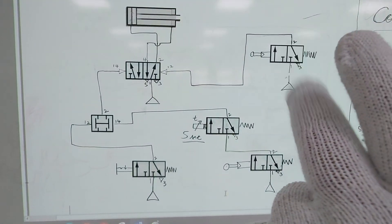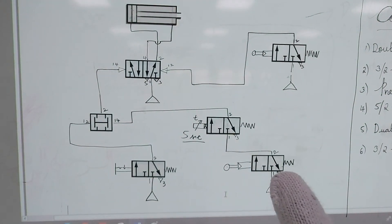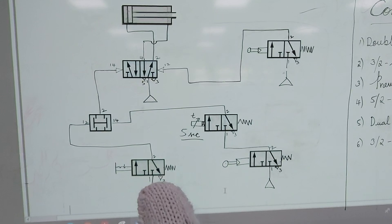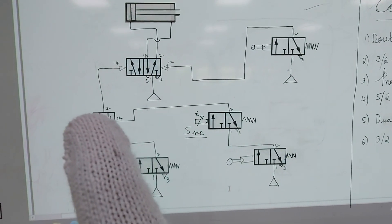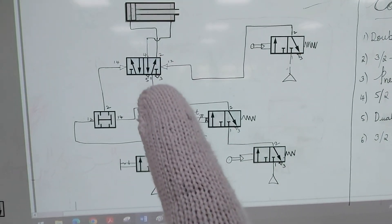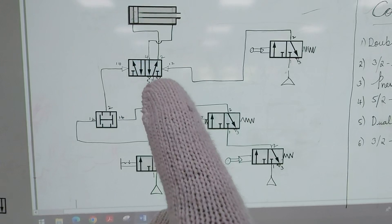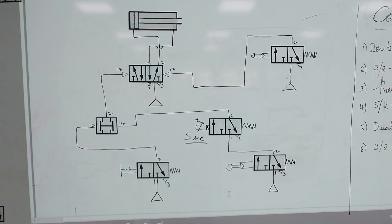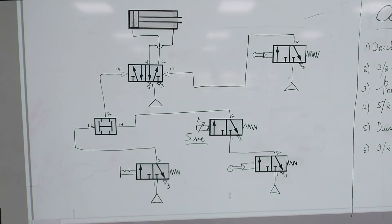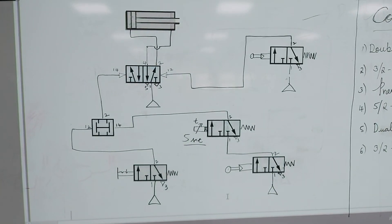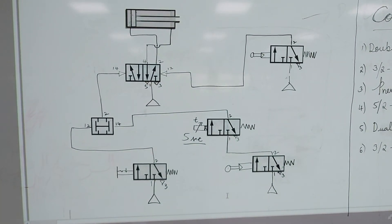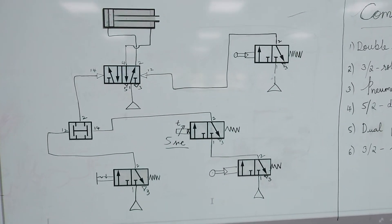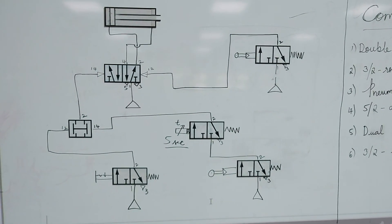To summarize the components: two rollers positioned at each end, one timer, one 3x2 selector switch, one dual pressure valve, one 5x2 double pilot valve, and one double acting cylinder. This is an automation circuit — once switched on, it will work in a continuous loop.